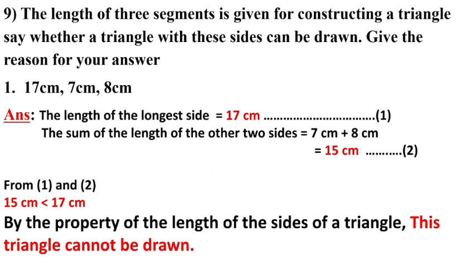It means the second equation should be greater than the first equation, but here what is given? The second equation is smaller than the first equation. So by the property of the length of the sides of a triangle, this triangle cannot be drawn.